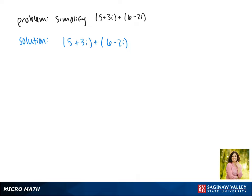Combining the 5 plus 6 gives us 11 as our real part, and 3 plus negative 2 gives us 1i. This is as simplified as we can make the expression, so this is our answer.